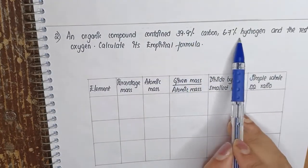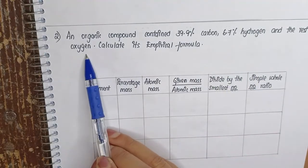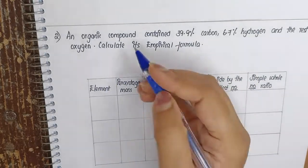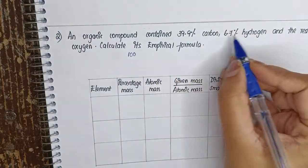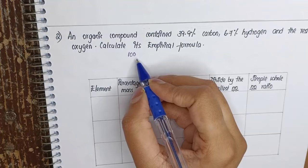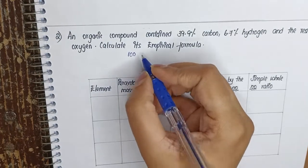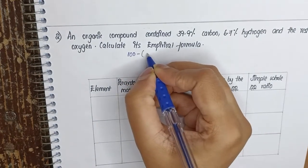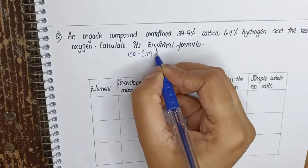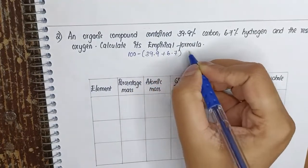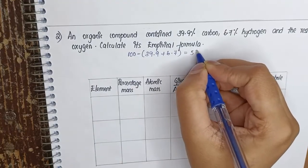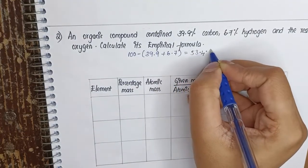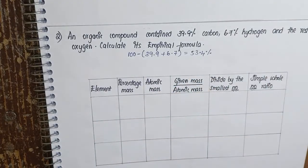Percentage of carbon is given, percentage of hydrogen is given, we need to find out oxygen. For this we'll have to write down 100, because when we calculate carbon, hydrogen, and oxygen, our total has to come to 100. So 100 minus 39.9 plus 6.7, when we calculate this we will get for oxygen 53.4 percent.